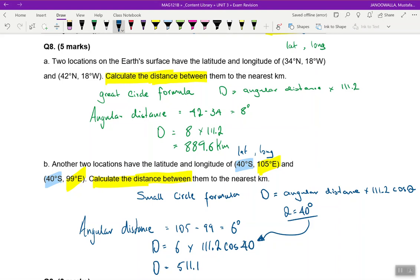Again, I didn't read my whole question, it should have been to the nearest kilometer. So I'm going to write my answer here as distance being equal to 890 kilometers, that's to the nearest kilometer. And this one's just going to be distance equals 511 kilometers.